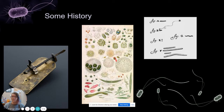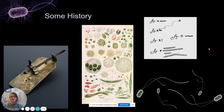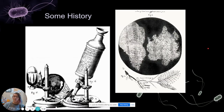He sketched some of the wee little beasties, or animalcules, that he found. If you've looked at pond water today you might recognize some as types of algae and diatoms, which are actually much closer in size to white and red blood cells than to bacteria. But Van Leeuwenhoek did manage to catch some smaller things, sketching shapes that make it clear he was looking at bacteria, even though we didn't really know what that was yet.